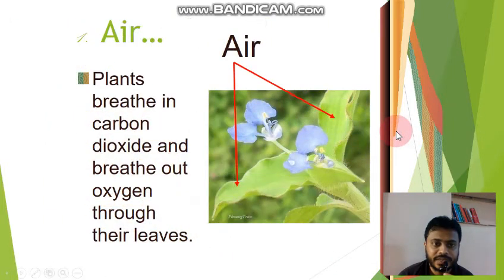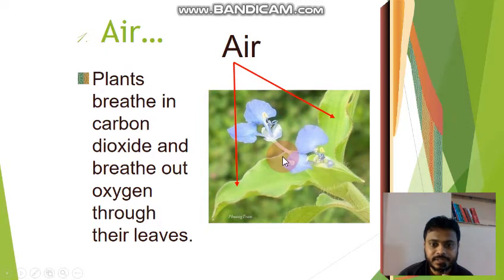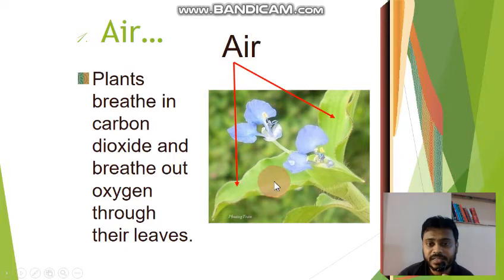First, air. Plants breathe in carbon dioxide and breathe out oxygen through their leaves. Plants also need clean and fresh air. Dirty air is harmful for plants.